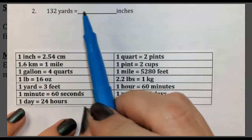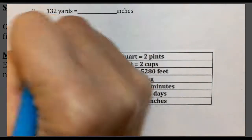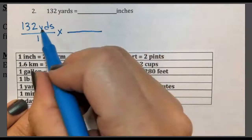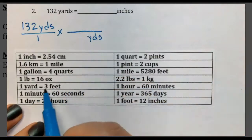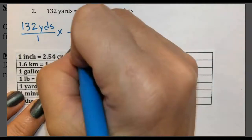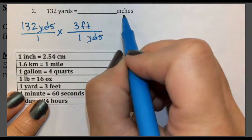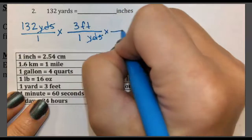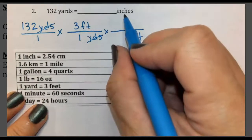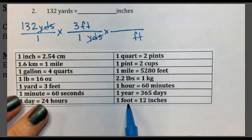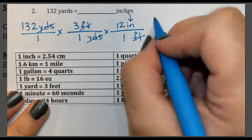Problem 2: 132 yards equals how many inches? Start by putting 132 yards over 1. I want yards to cancel, so I place yards at the bottom of the next step and use the conversion 1 yard equals 3 feet — yards cancel. I'm now at feet, but I want inches, so I continue. Feet go to the bottom of the next step, and I use 1 foot equals 12 inches. Feet cancel, and I'm left with inches, so I can stop setting up the problem.